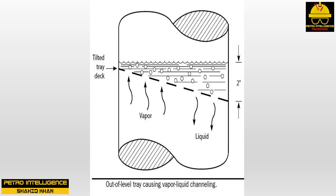In this picture, the edge view of a tray that is 2 inches out of level. As illustrated, liquid accumulates on the low side of this tray. Vapor, taking the path of least resistance, preferentially bubbles up through the high side of the tray deck. To prevent liquid from leaking through the low side of the tray, the dry tray pressure drop must equal or exceed the sum of the weight of the aerated liquid retained on the tray by the weir, plus the crest height of liquid over the weir, plus the 2-inch out-of-levelness of the tray deck.